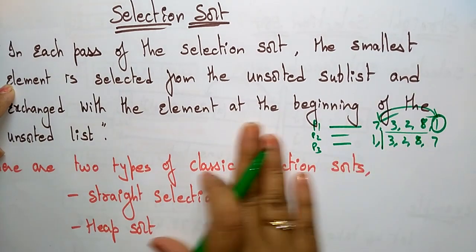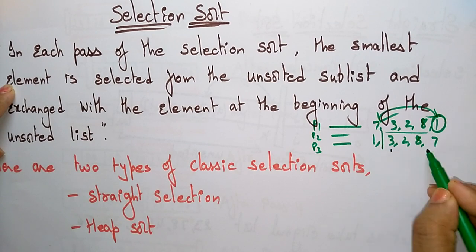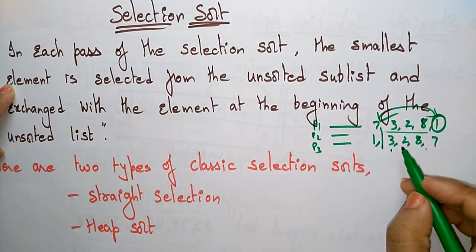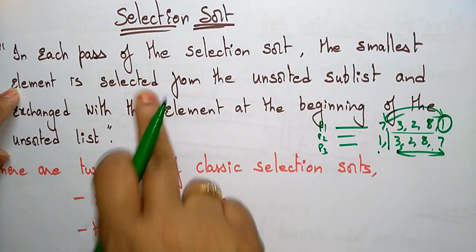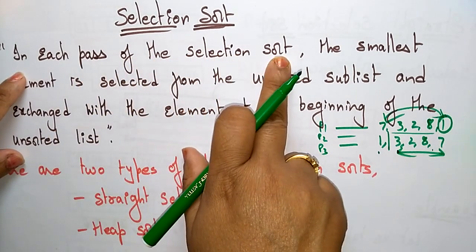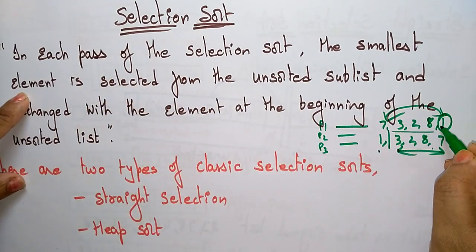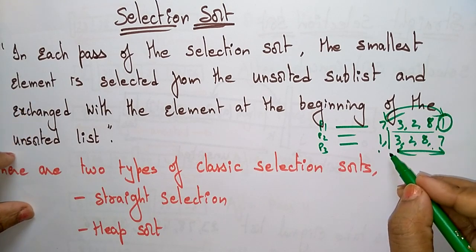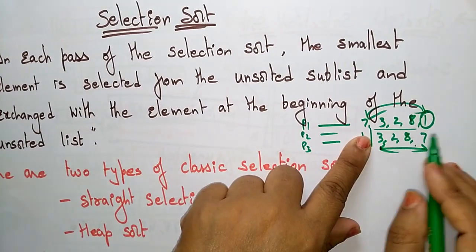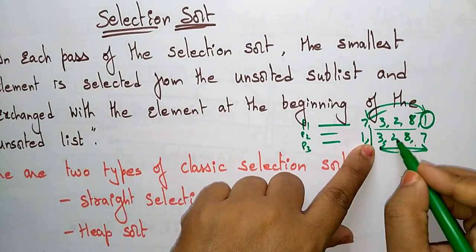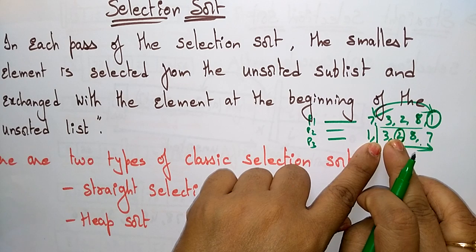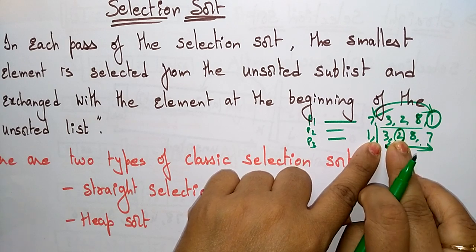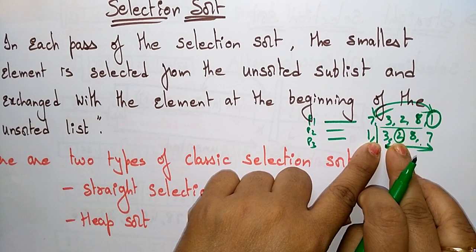So now 1 becomes sorted. Just leave it. Now in the next pass you have to recalculate. This is a sublist — this is a sorted sublist and this is an unsorted sublist. You have to concentrate only on the unsorted. In each pass of the selection sort the smallest element is selected from the unsorted sublist and exchanged with the element at the beginning of the unsorted list. In the next pass, what is the smallest element here? The smallest element is 2. It is selected from the unsorted and exchanged with the element at the beginning — which is 3.